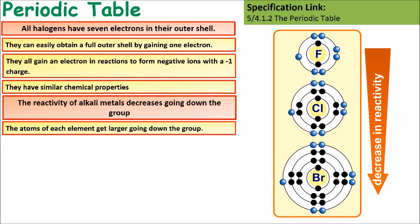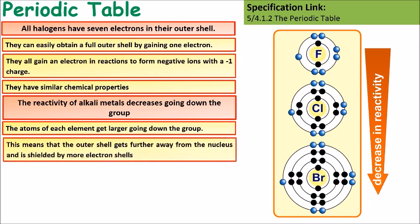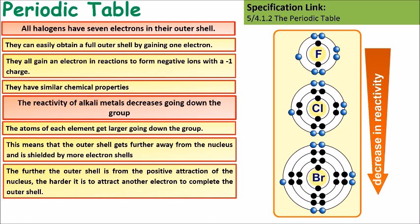Same as before, as you go down the group the atoms get larger. This means that the outer shell gets further away from the nucleus. The further the outer shell is from the positive nucleus the harder it is for it to attract another electron. Therefore the higher up the group you go the more reactive the atom will be.